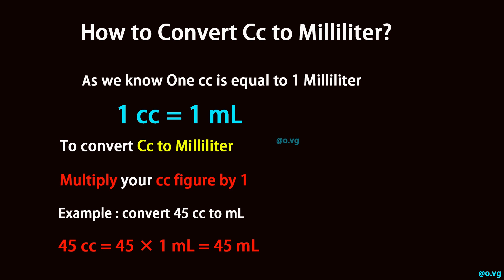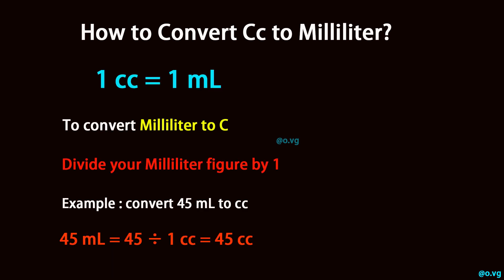Example: convert 45 cc to milliliters. 45 cubic centimeters equals 45 multiplied by 1 milliliter, which equals 45 milliliters. To convert milliliter to cc, divide your milliliter figure by 1.